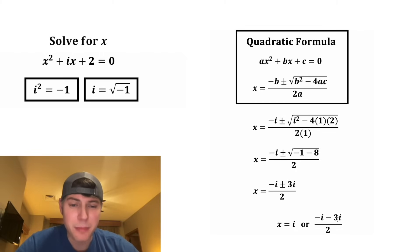And then for this one, negative i minus 3i is negative 4i. And negative 4 divided by 2 is negative 2. So the other solution is negative 2i.